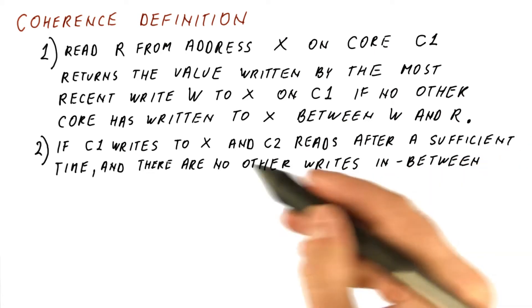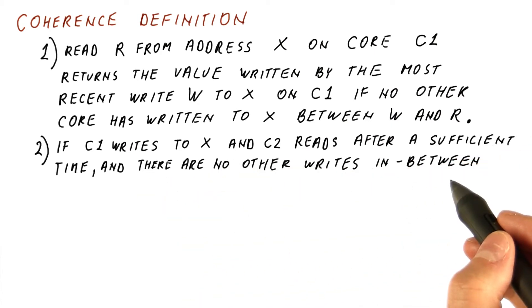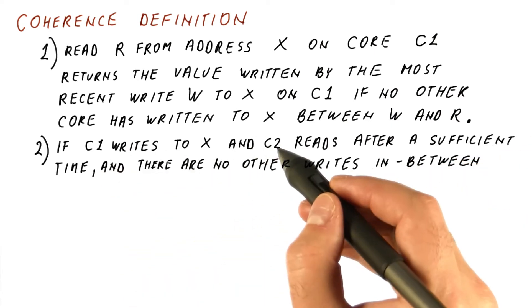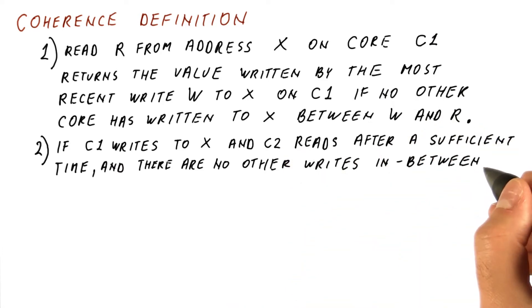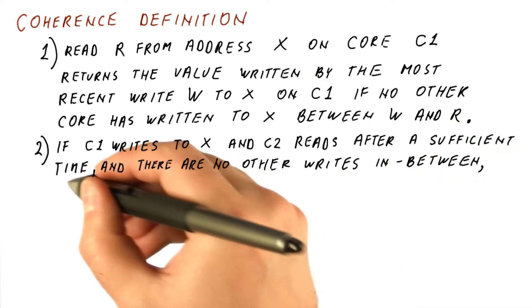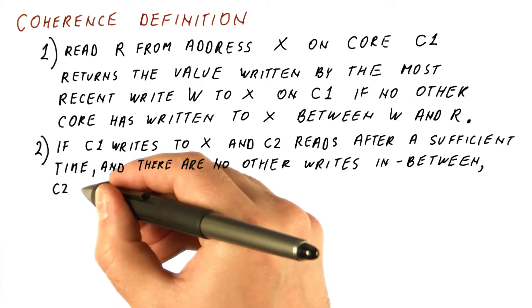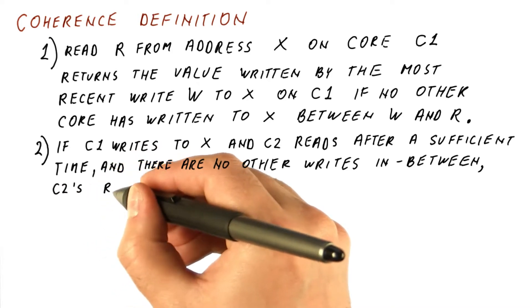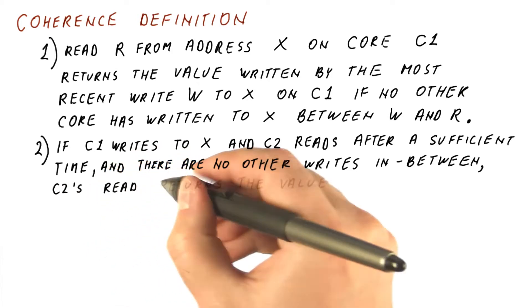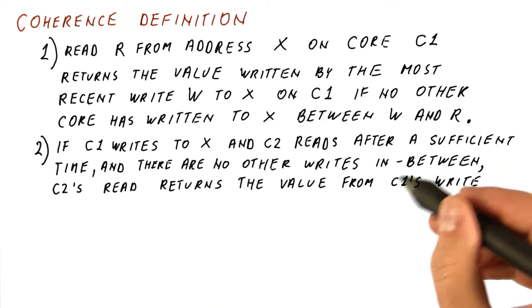The second part of the definition says that if core c1 writes to a location x, and c2 reads x after a sufficient time, and if there are no other writes that happen in between c1's write and c2's read, then c2's read must return the value c1 wrote.